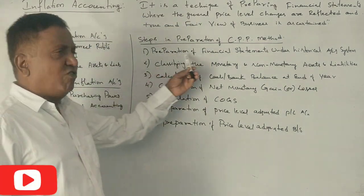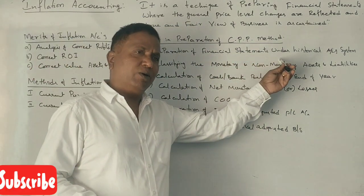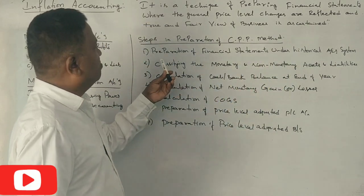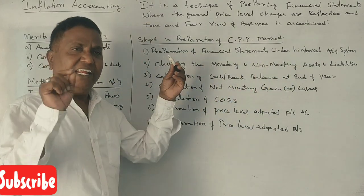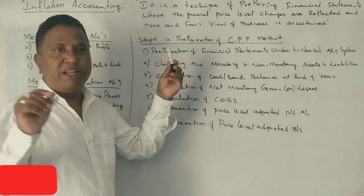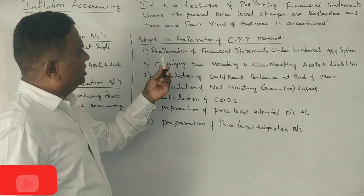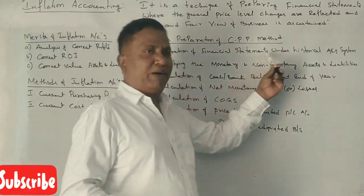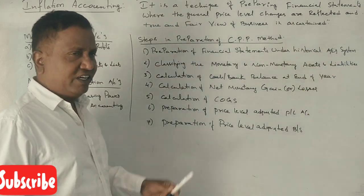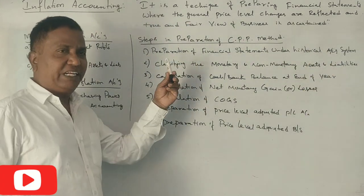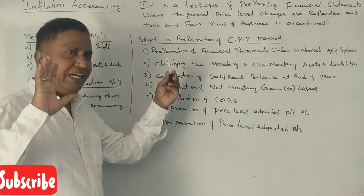Now let's look at what are the steps involved in the preparation of financial statements under the Current Purchasing Power method. The first step is the preparation of financial statements under the historical accounting system — the historical financial accounting information is already given in the problem.